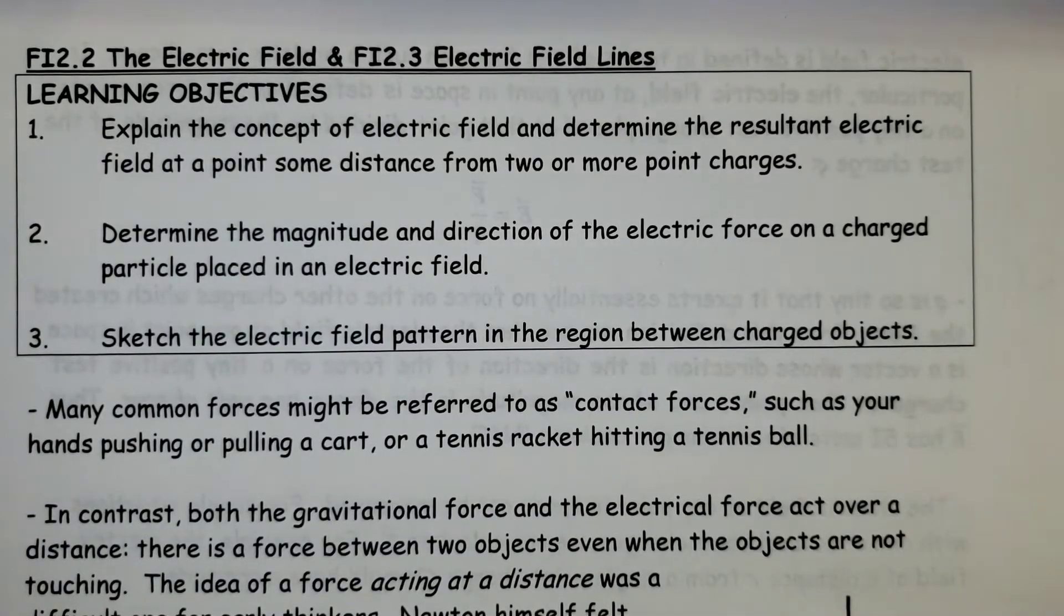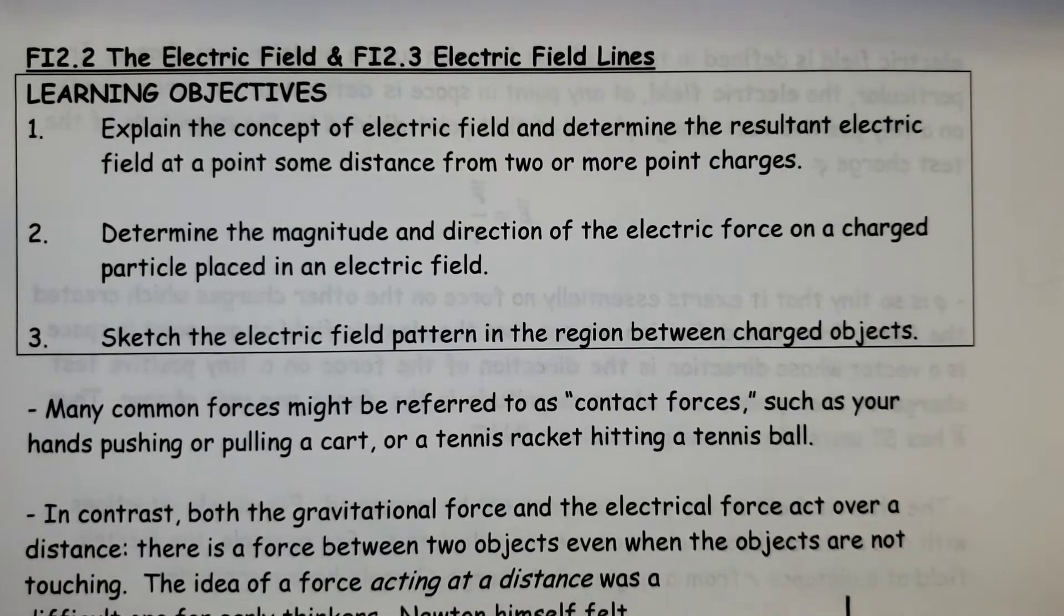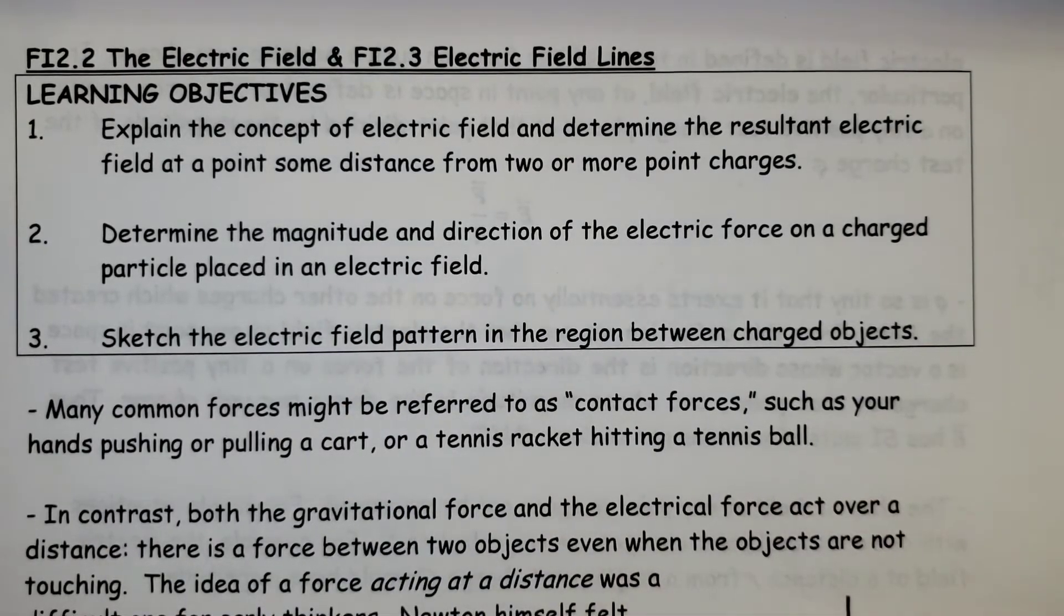Welcome back, Physics 30. This is FI 2.2 and FI 2.3. We're going to combine both of them together, the electric field and electric field lines.